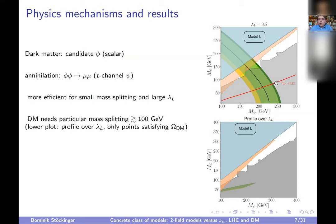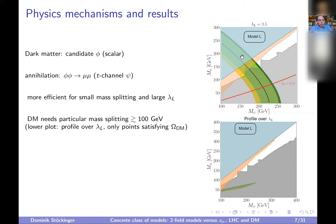So dark matter mass 50 GeV and psi mass 150 GeV would work, or dark matter mass 100 GeV and psi mass 250 GeV. You need a mass splitting of around 100 to 150 GeV. In the lower plot, profiling over all coupling values gives the same picture. If the mass splitting is larger, annihilation becomes too inefficient and you get too much dark matter — below the line is excluded. Above the line you get not enough dark matter, which is not forbidden but means you cannot explain it in this region.